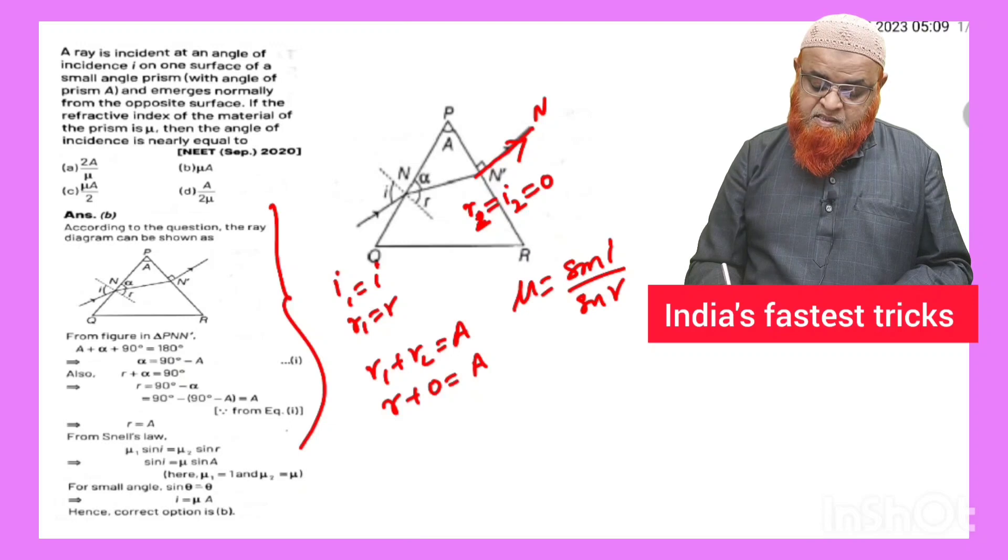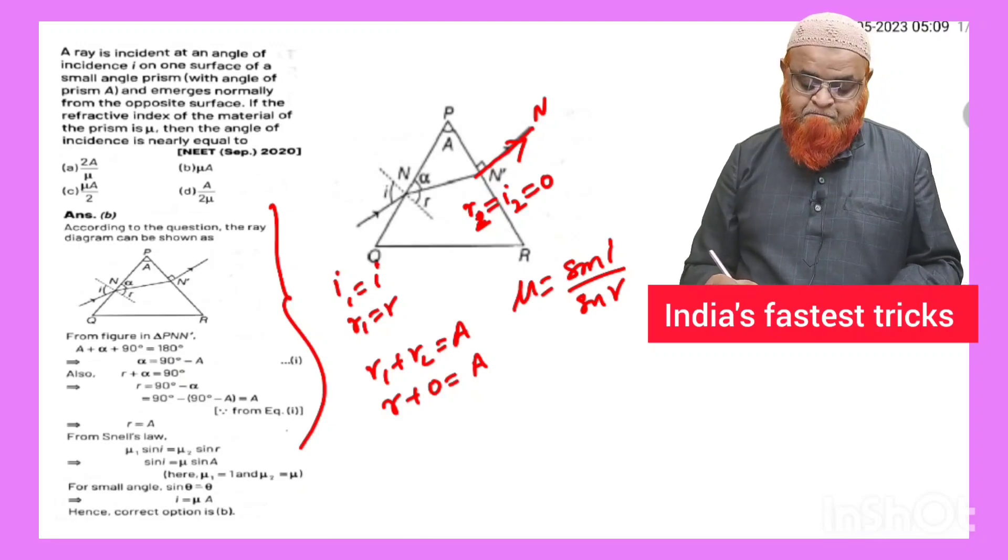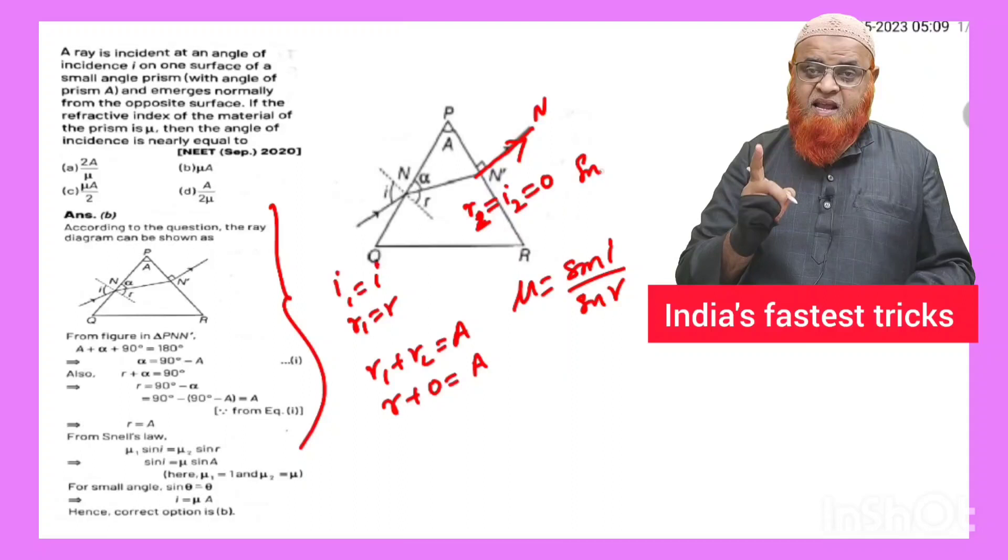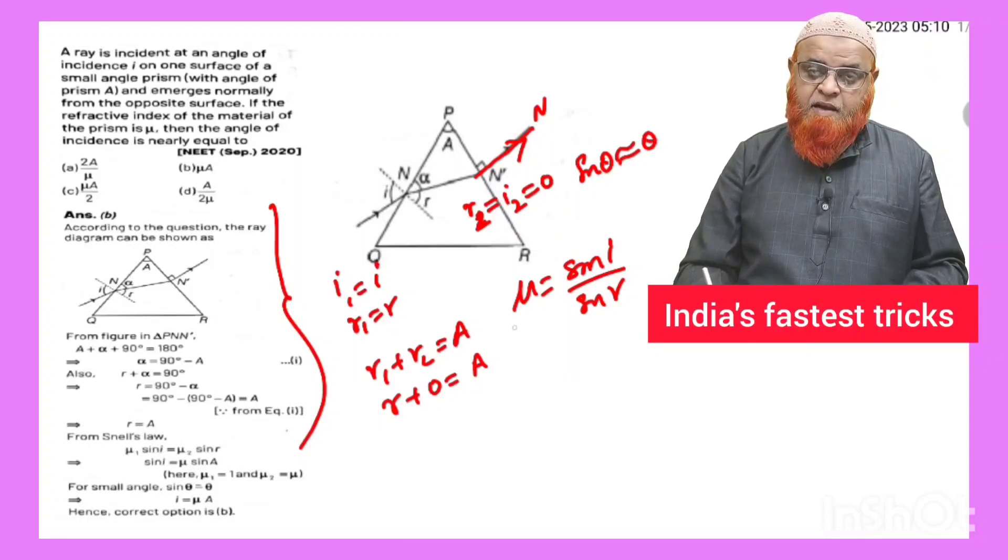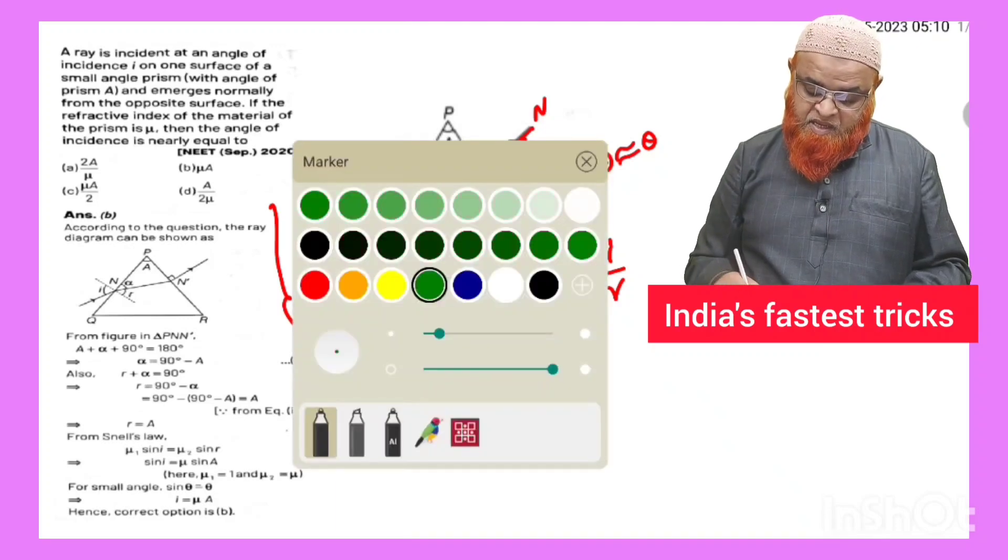For small angles we can write sin theta approximately equal to theta. Therefore this can also be written as mu is equal to i by r.